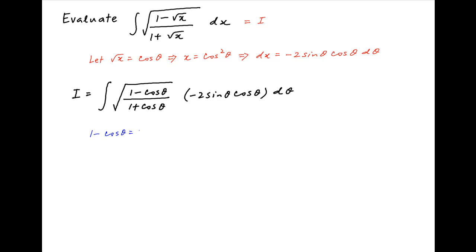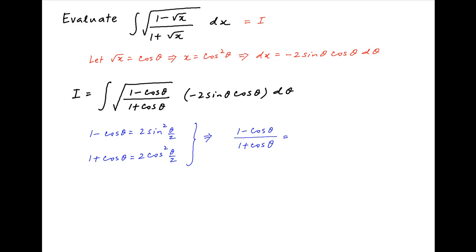Now, 1 minus cos theta is equal to 2 sine squared theta upon 2, and 1 plus cos theta is equal to 2 cos squared theta upon 2. Therefore, 1 minus cos theta divided by 1 plus cos theta is equal to sine squared theta upon 2 divided by cos squared theta upon 2. Taking the square root of both sides, we get square root of (1 minus cos theta) divided by (1 plus cos theta) is equal to sine theta upon 2 divided by cos theta upon 2.